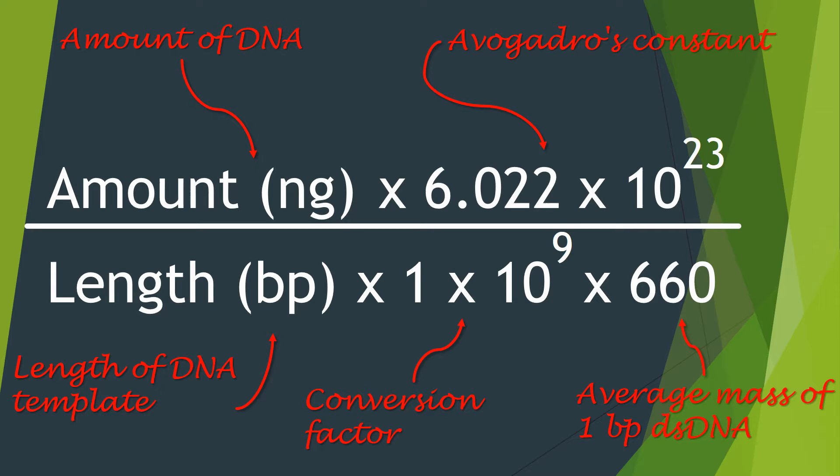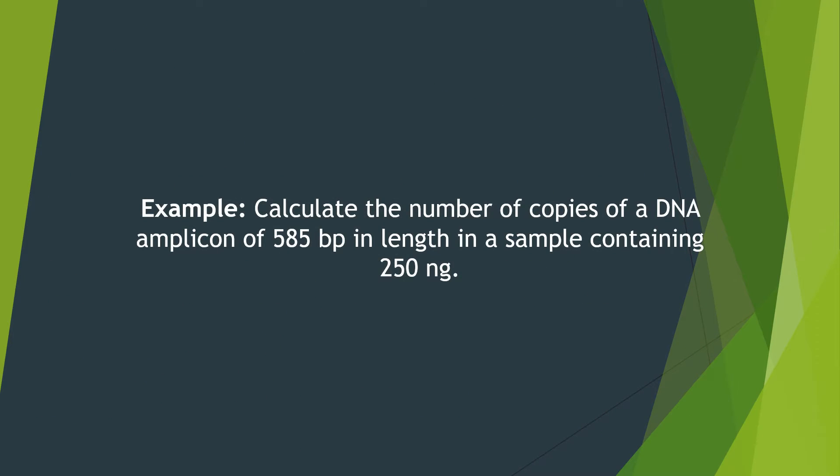So that's the equation used to calculate the number of copies. Now let's go and use an example. In the example, we want to calculate the number of copies of a DNA amplicon of 585 base pairs in length in a sample containing 250 nanograms of DNA.